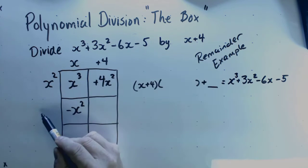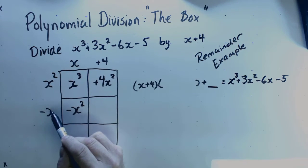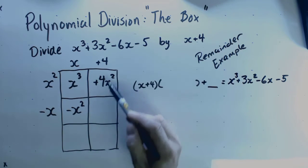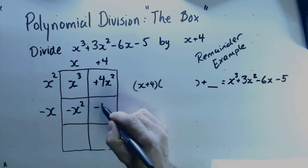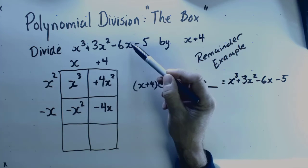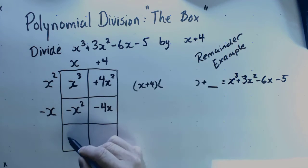x times something is -x², so this is -x. -x times 4 is -4x. I need -6x, so this has to be -2x down here.